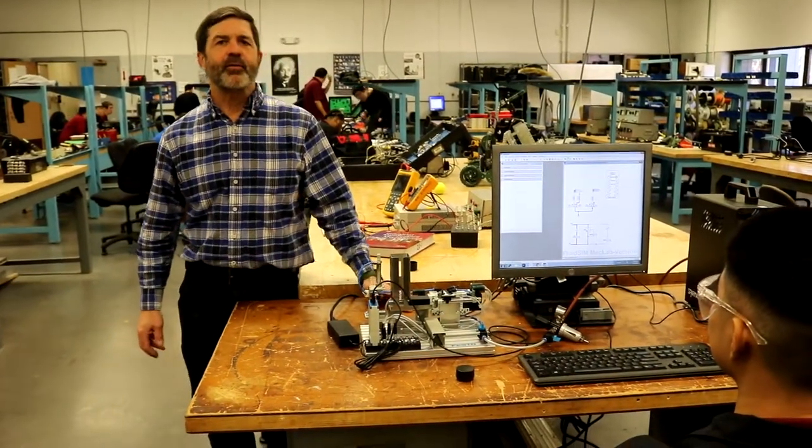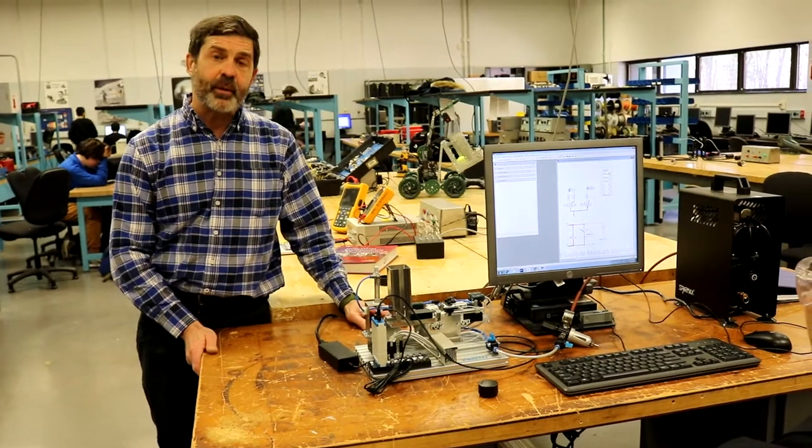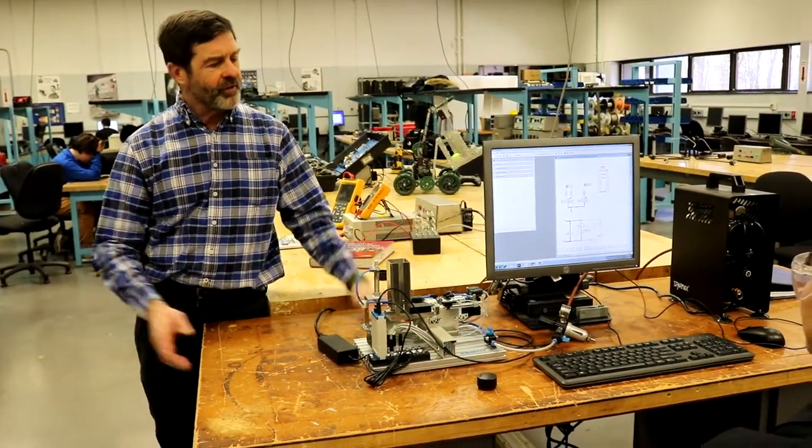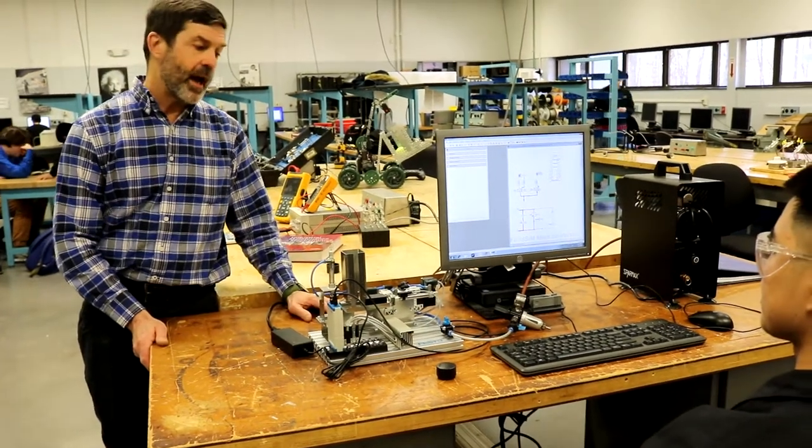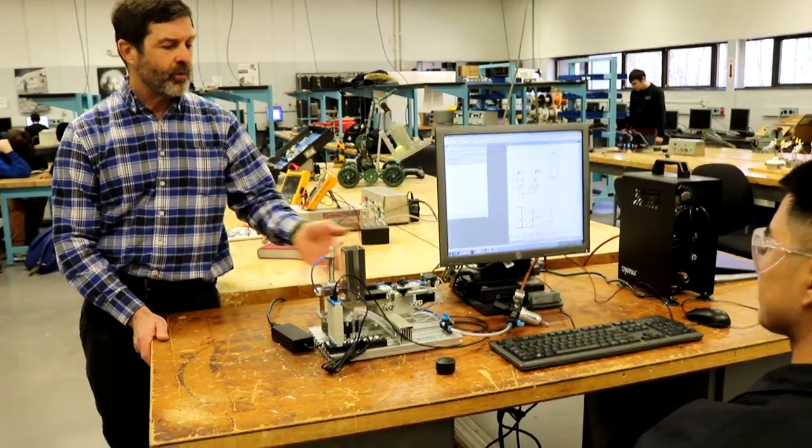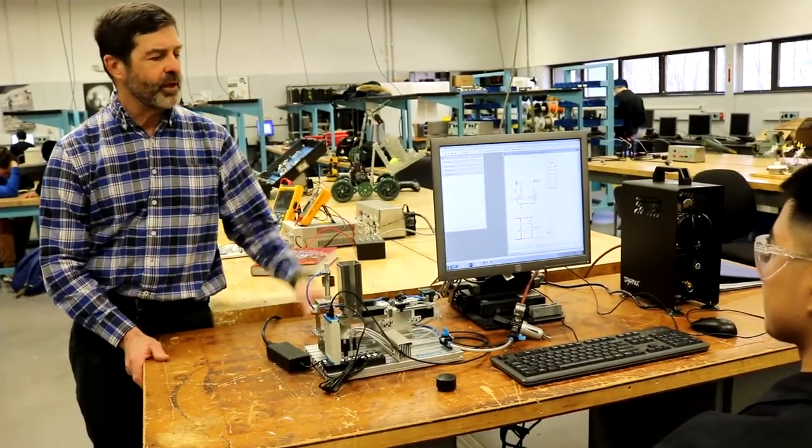This is a piece of equipment that you would find in industry that's used to automate an assembly process. In the old days, they would have lots of people doing assembly. In this case, they have a computer that's programmed to make the assembly process happen without human intervention.